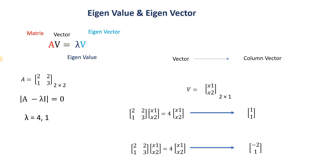Let's take one example. We have a 2×2 matrix. To calculate the eigenvalue we use the determinant formula. Once we compute it, each eigenvalue gives one corresponding eigenvector. From the eigenvalue of 4 we get one eigenvector, and from the eigenvalue of 1 we get another eigenvector.